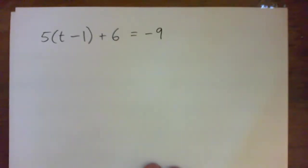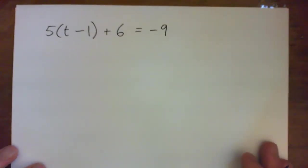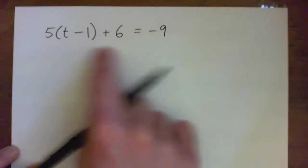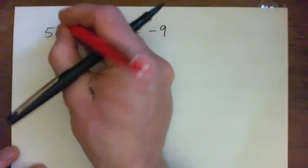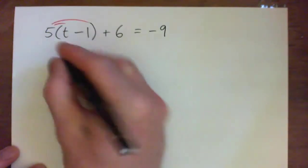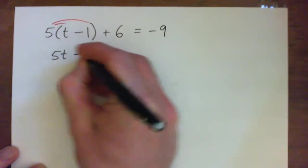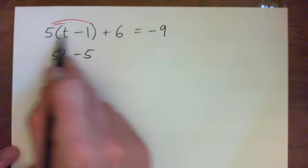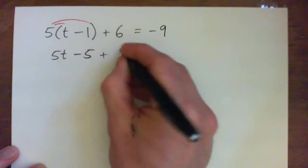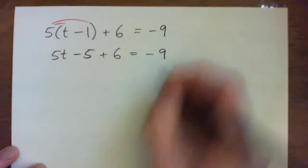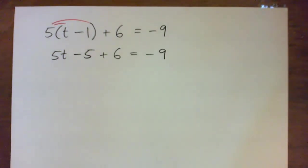I'll solve it now. So we're going to simplify both sides. To simplify the left, let's multiply by 5: 5t minus 5. So we're doing the distributive property with 5, plus 6 equals negative 9. So we did our distributive property. Now we can do what?